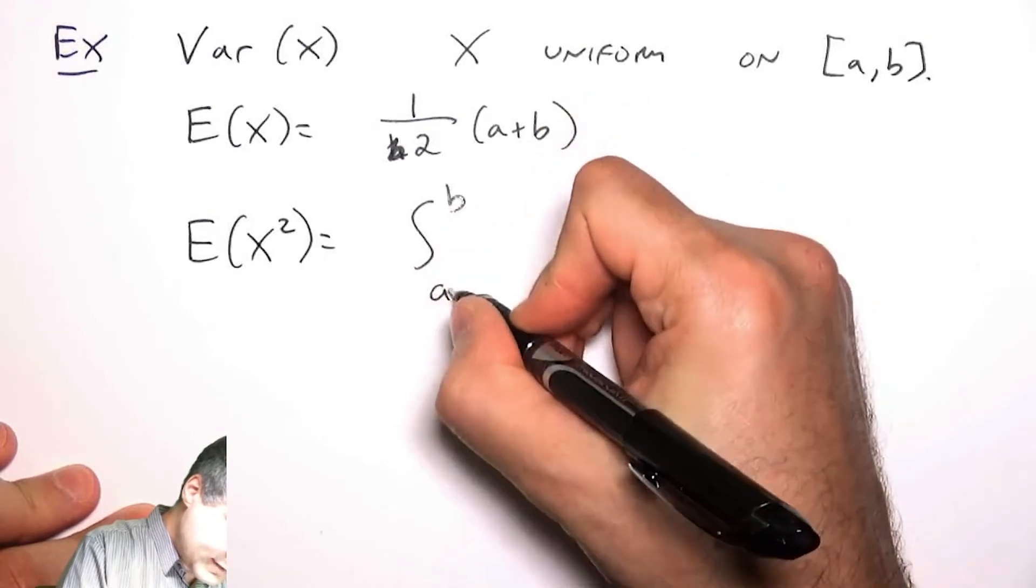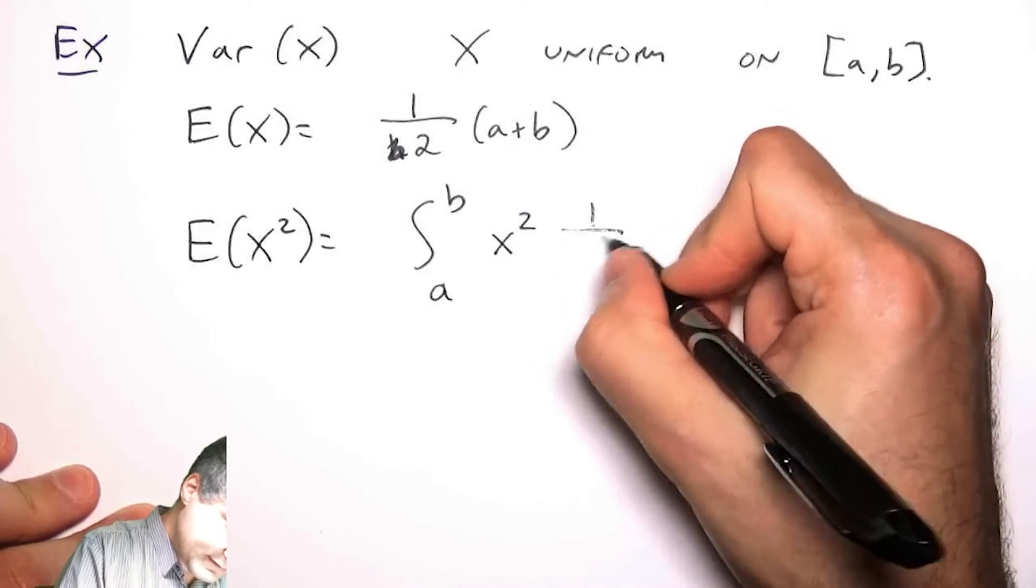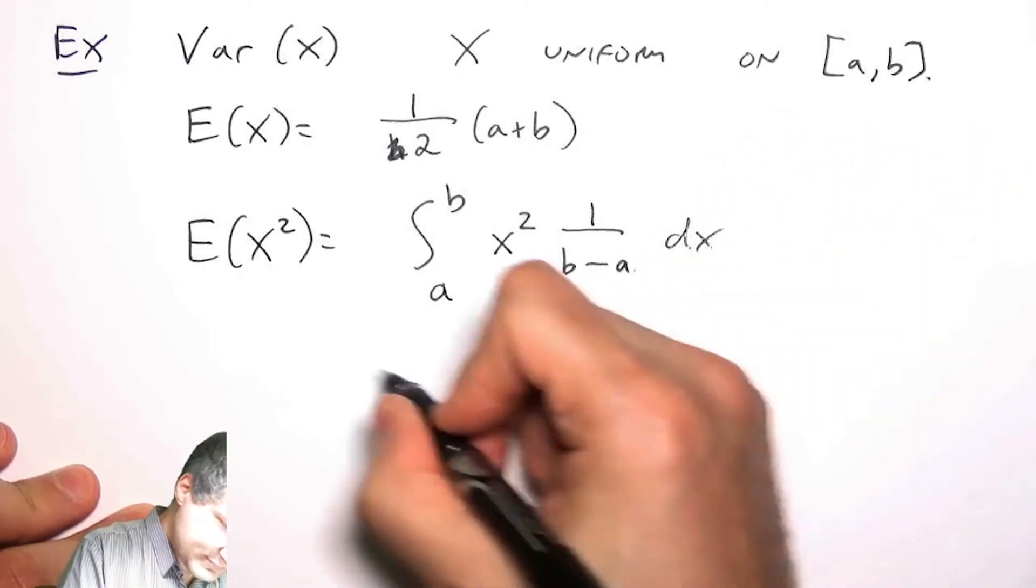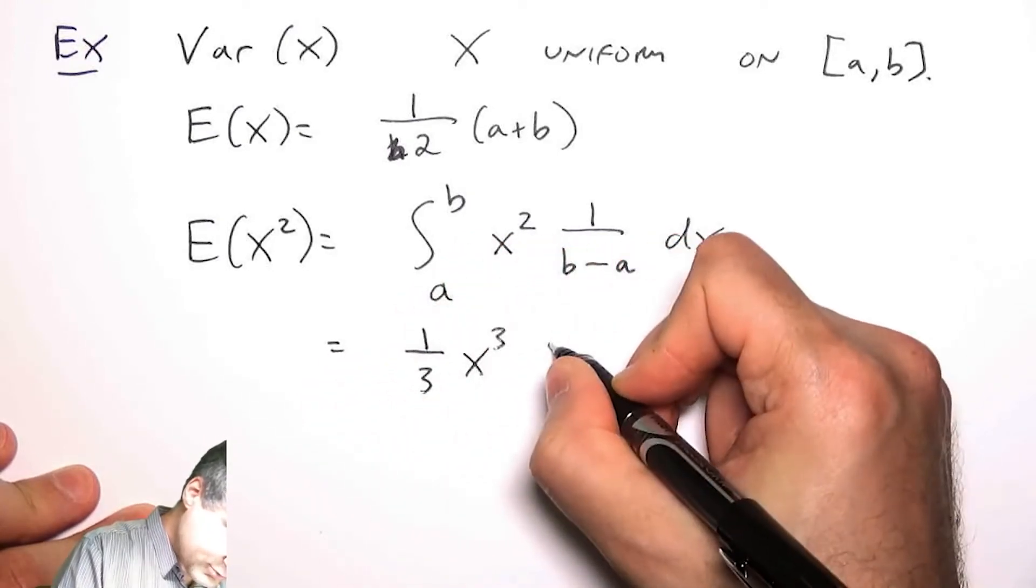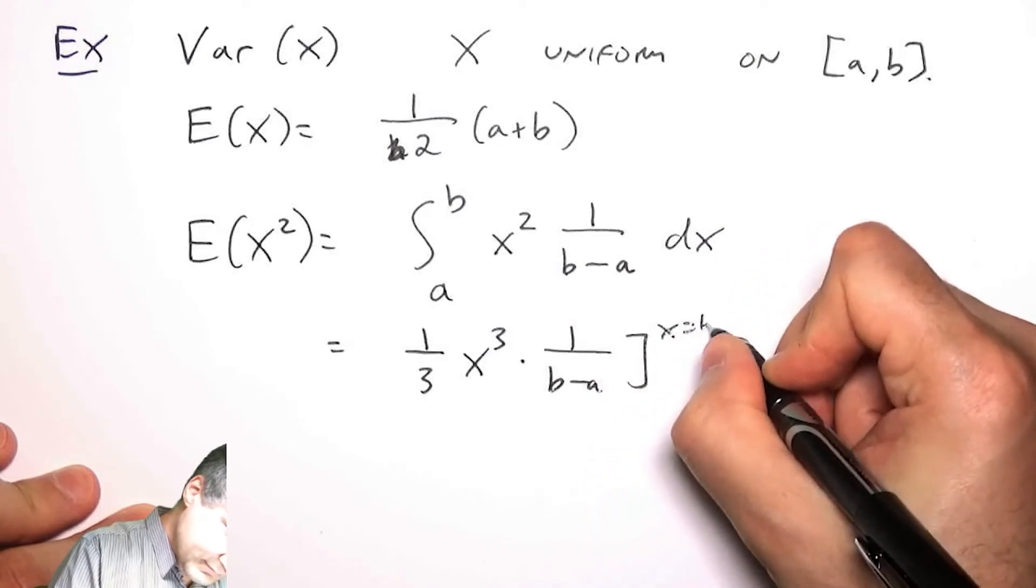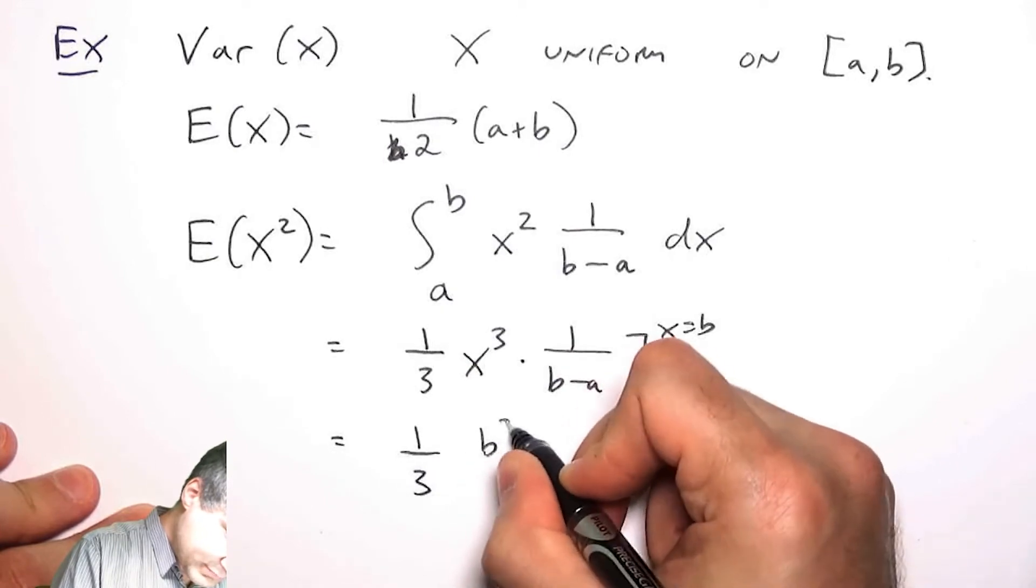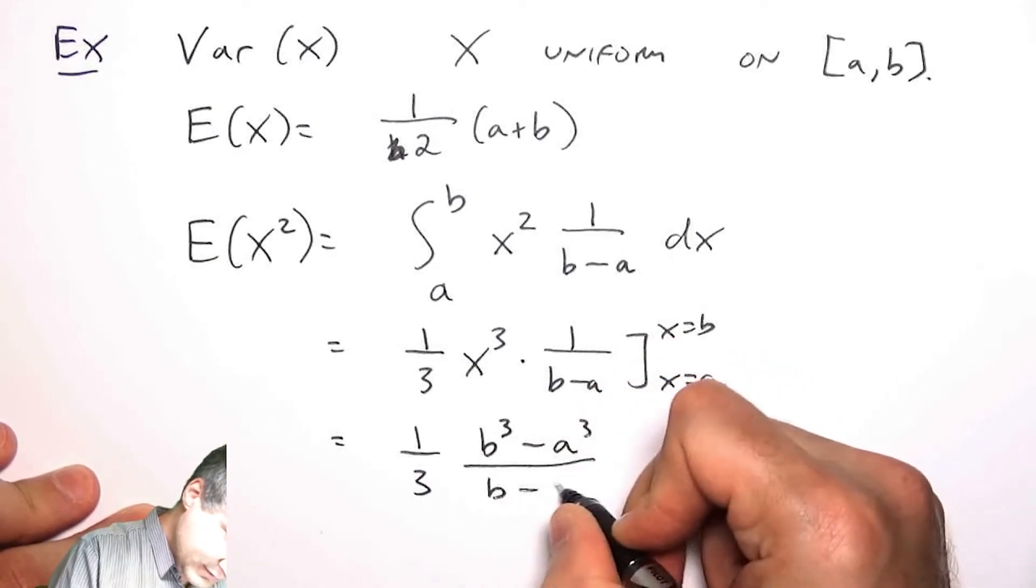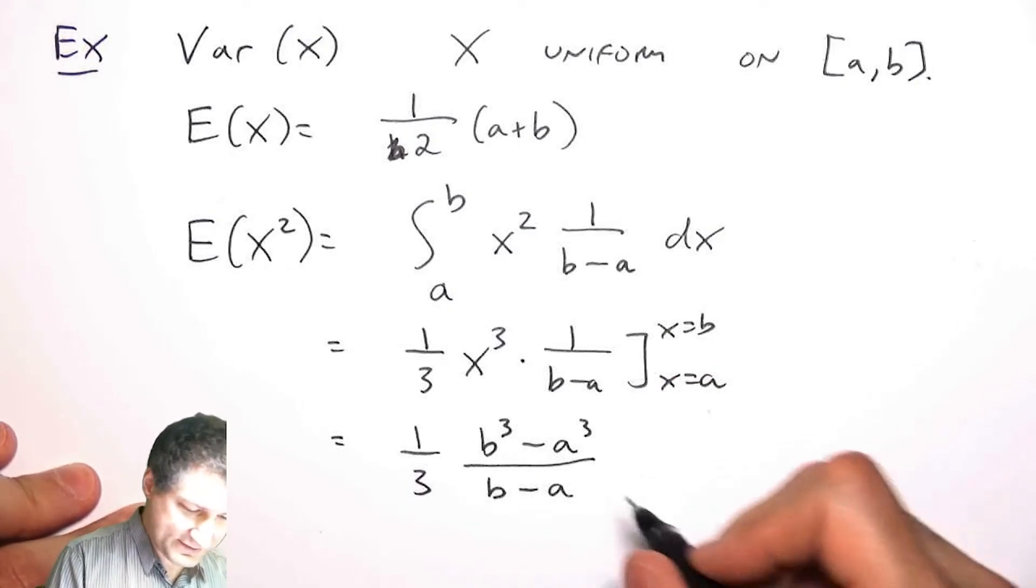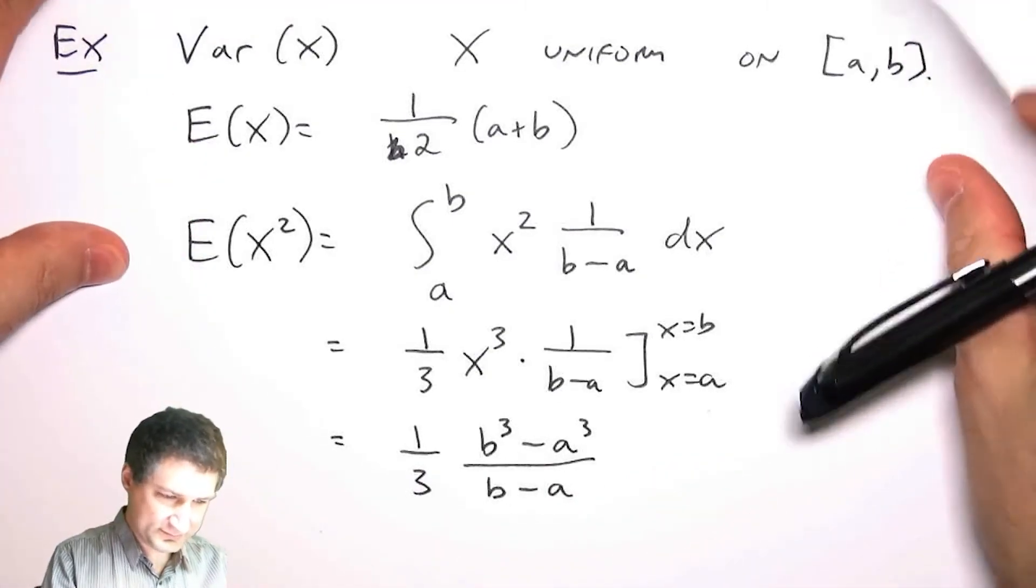Now I have to compute what is the expected value of X squared. Let's just do it. I'm going to integrate from a to b, X squared times the PDF, which is 1/(b-a) dx. So I'm going to have ⅓X³ times 1/(b-a) evaluated from a to b, so I'm going to get ⅓(b³-a³)/(b-a).